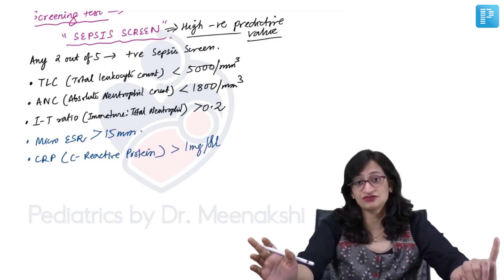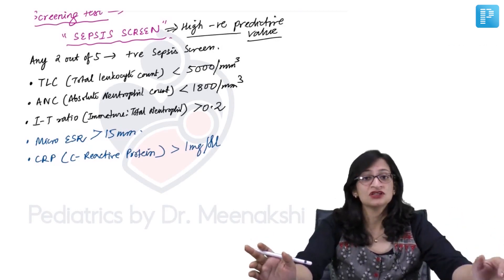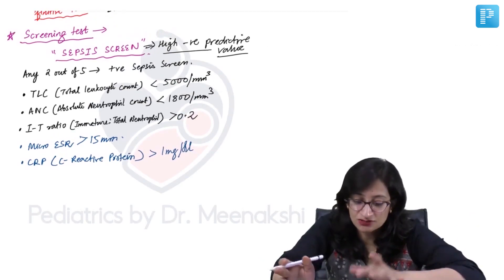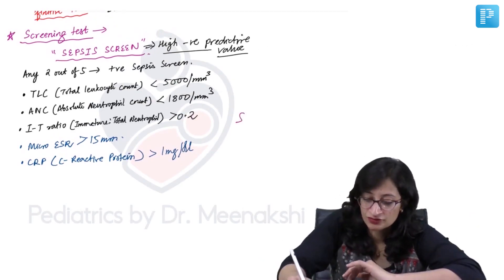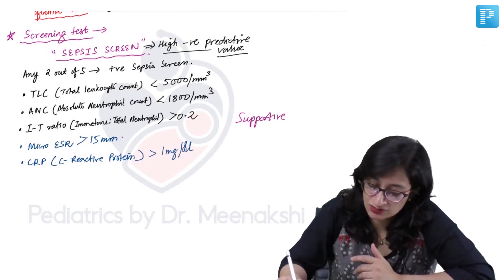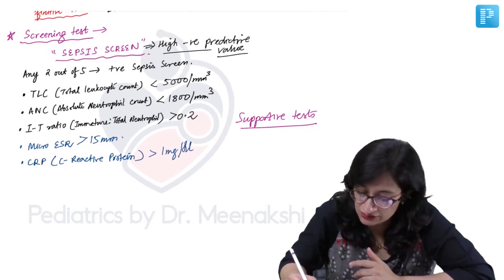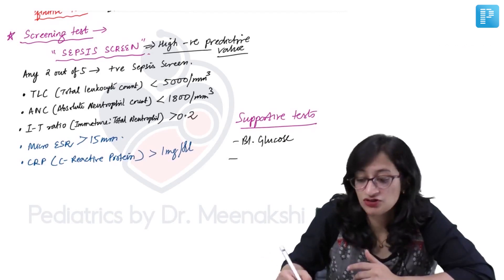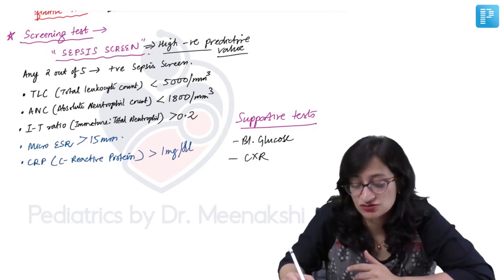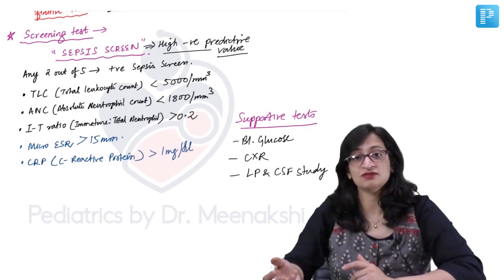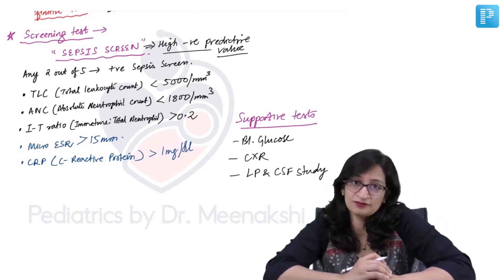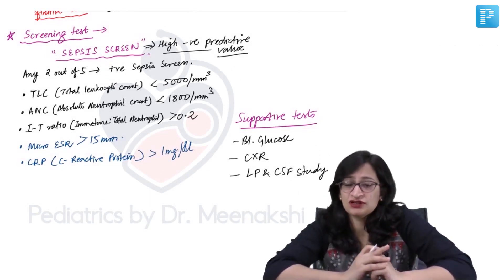For the diagnosis of neonatal sepsis: the definitive test is blood culture; the screening test is sepsis screen with 5 components — 3 related to WBC and 2 others. Apart from that, some supportive investigations are needed depending on the condition of the baby. The supportive tests include blood glucose level, chest X-ray if the baby has respiratory manifestations, and lumbar puncture with CSF study if the baby has late onset sepsis, irritability, seizures, or any clinical features suggestive of meningitis.